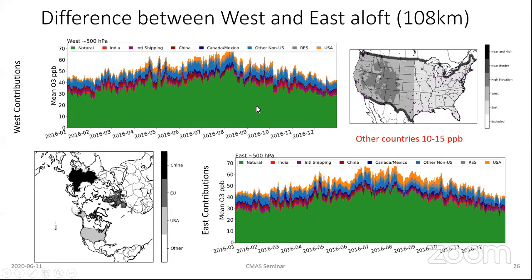Looking at the seasonal evolution: natural is shown, India in red, international shipping in purple, China in maroon, Canada and Mexico in dark blue, other non-U.S. anthropogenic in lighter blue, gray is the non-linear component, and USA is orange. In the West, you're at high elevation and haven't had much interaction with the U.S. continent yet, so you don't see as much of that anthropogenic U.S. contribution. As you move eastward, the contribution from the U.S. increases, though we're still at high altitude so concentrations haven't mixed upward as much.